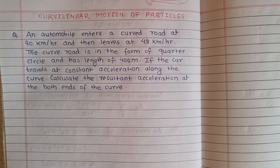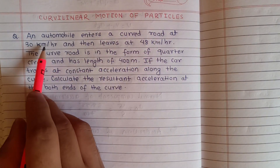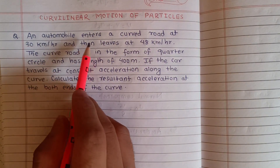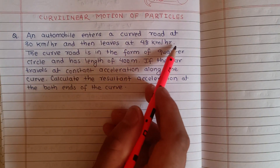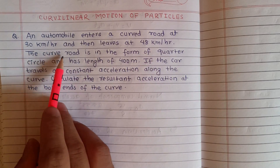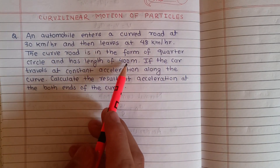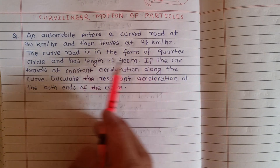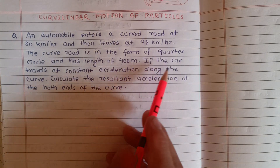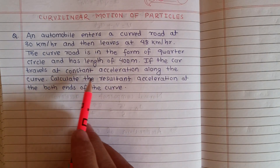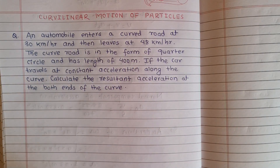Question raako chha: An automobile enters a curved road at 30 km per hour and then leaves at 48 km per hour. The curved road is in the form of a quarter circle and has a length of 400 meters. If the car travels at constant acceleration along the curve, calculate the resultant acceleration at both ends of the curve.